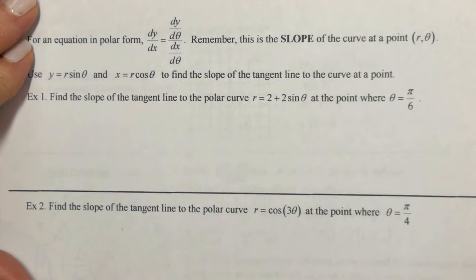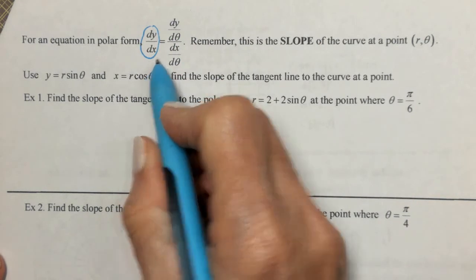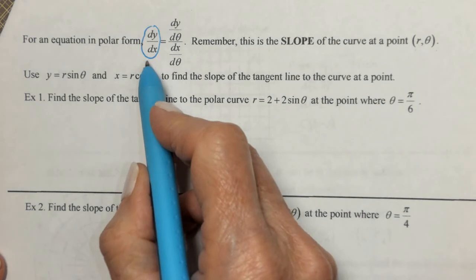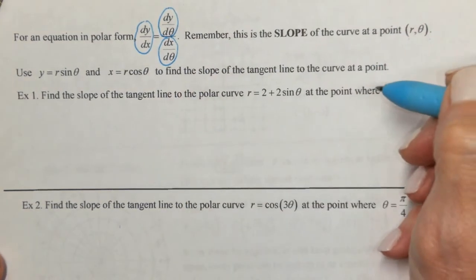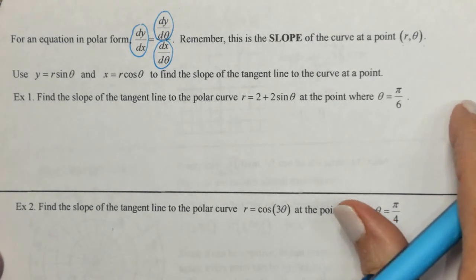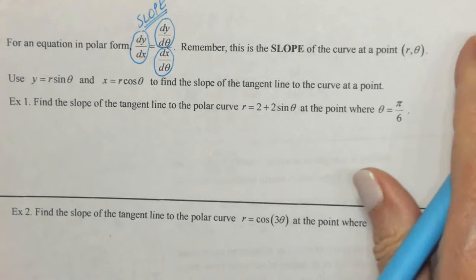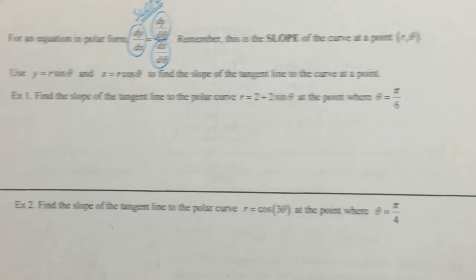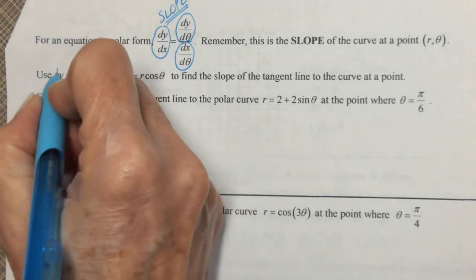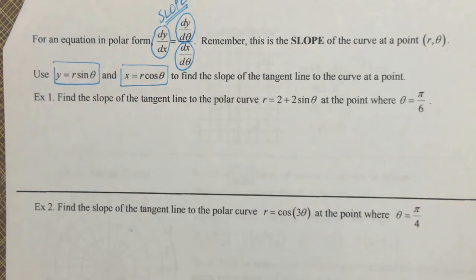Now let's get to some calculus. For an equation in polar form, dy/dx is the slope — even though your points are (r, θ), the slope is still dy/dx. To get the slope, we need dy/dθ divided by dx/dθ, very similar to what we did with parametric equations and vectors. dr/dθ is not the slope; dy/dx is always the slope. Since dy/dx involves y and x, we'll use y = r·sin θ and x = r·cos θ.